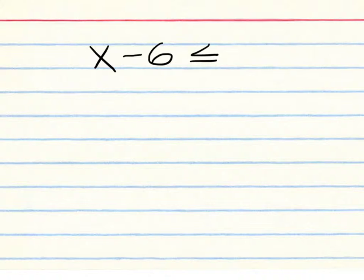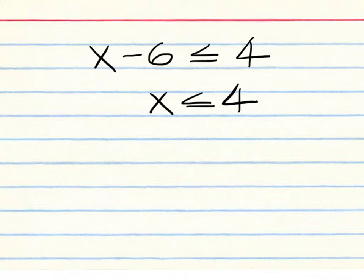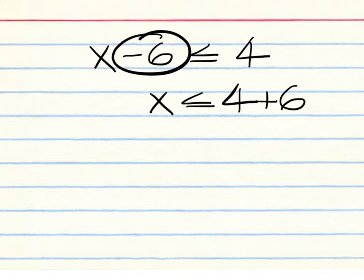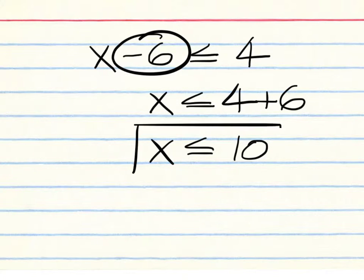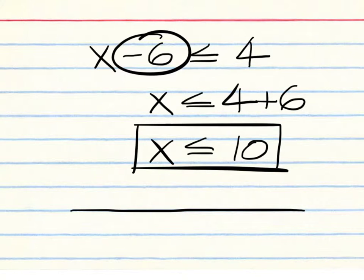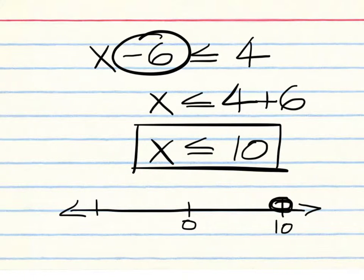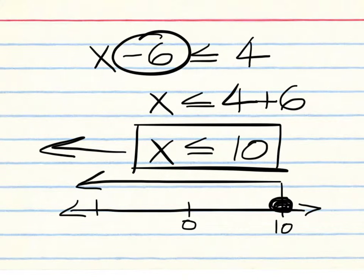Next example: x minus 6 less than or equal to 4. Keep the x on the left and the 4 on the right, but move the 6 over and make it plus 6. x less than or equal to 10 is what you're turning in for your practice problems today. To graph it, make a number line with 0 in the middle and 10 on the right side. It's going to be a closed dot because it's less than or equal to, pointing to the left. Carry the arrow all the way through — don't make your graphs too short.